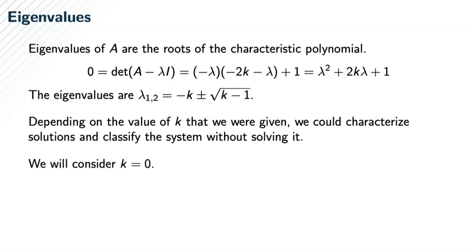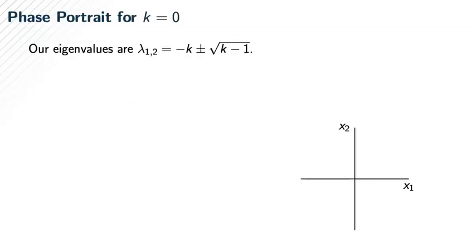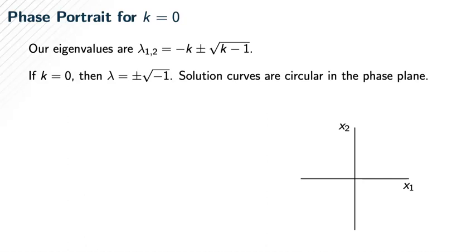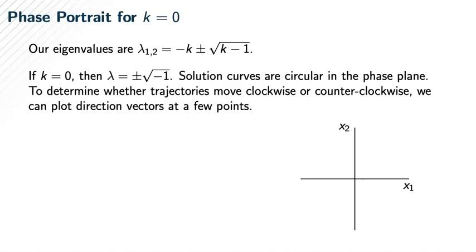Let's consider k equals 0. In this case, our eigenvalues are ± √(-1), which you might have seen before—that's the imaginary number often called i. When we see a system where the eigenvalues are pure imaginary, the solution curves are circular in the phase plane.